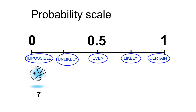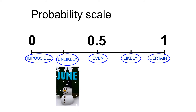Here's our little probability scale. What could be an example of something that's impossible? If you roll a six-sided die, the chance of getting a 7 is 0 - it's impossible because there's no 7 on the dice. If we think about something that's unlikely, it's unlikely that it will snow in June. It's not completely impossible - there is a small chance - but it's very unlikely.